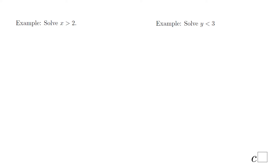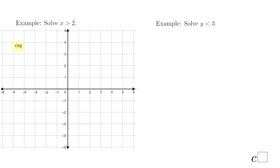Let's look at the last two examples. First: solve x > 2. On the grid, graph the equality x = 2, which is a vertical line right at x = 2. It must be a dashed line because the inequality has no equal sign. This statement means shade all points for which the x-coordinate is greater than 2 — like 3, 4, 5, 6 — so we shade to the right of the line.